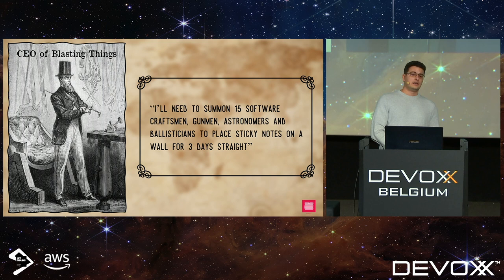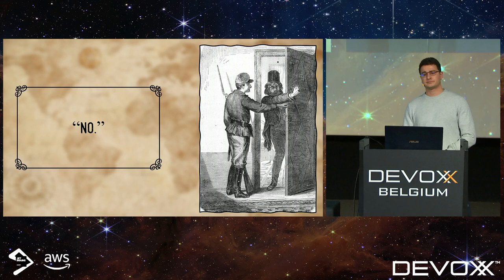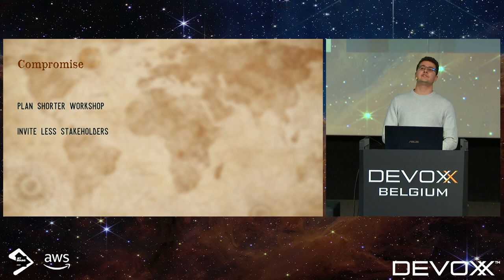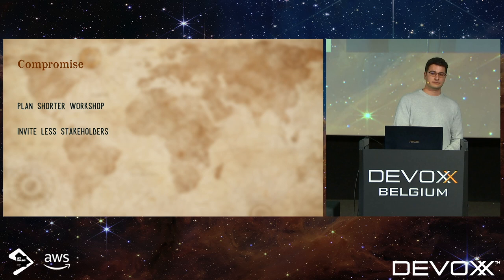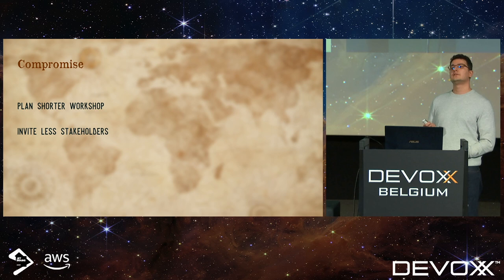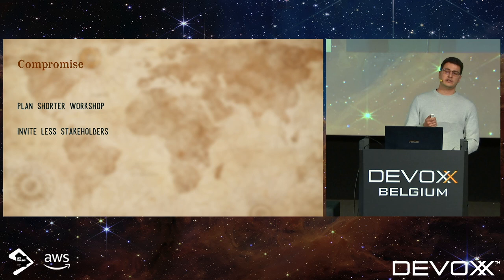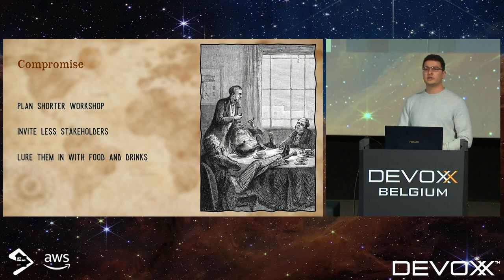Running such a workshop is very expensive. Sadly software development is still a young field — software craftsmen are still seen only as executants, so our request is denied. In order to have our workshop anyway, we need to compromise. Maybe we don't need to understand the entirety of our system right away — we can focus on a sub-part that's more important right now, reducing it from days to hours. Maybe we don't need every single stakeholder. And because even those domain experts might not want to lose their afternoon, we use the ancient technique of the ambush: lure them in with food and drinks, mentioning we just need clarification on a few topics.